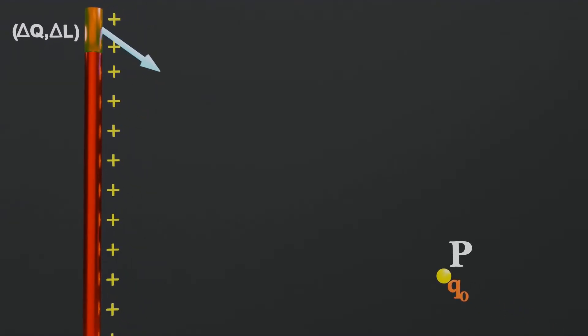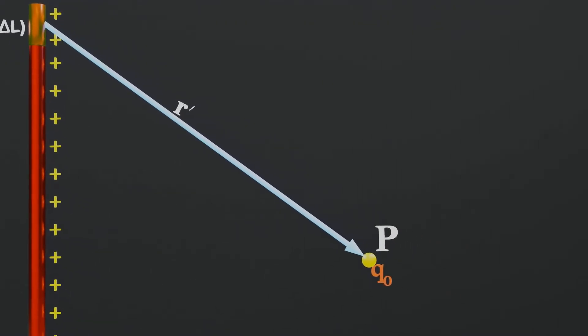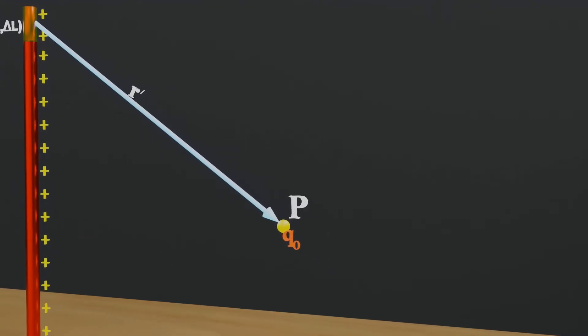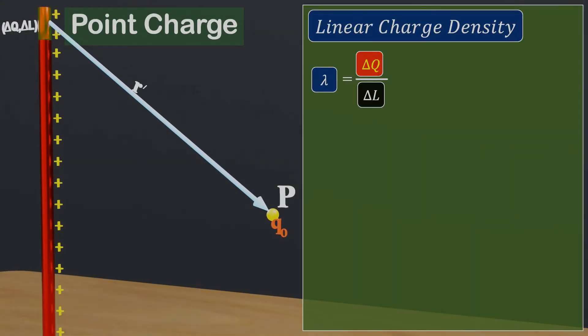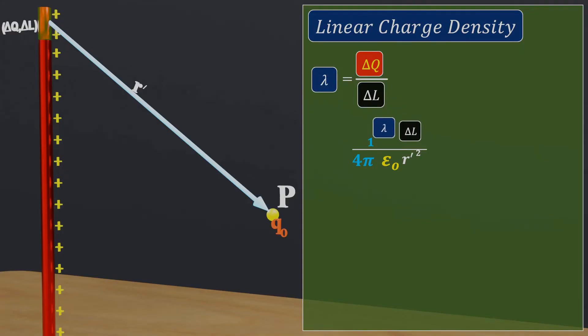Now, let's place a test charge q0 at point P, separated by distance r prime from the element del L to measure the electric field intensity at point P. Since the size of the del L element is much smaller than the distance r prime, we can consider the charge del Q as a point charge, and Coulomb's law can be applied now. Therefore, the small electric field del E at point P will be equal to 1 upon 4 pi epsilon 0 times del Q divided by r prime square. Using the formula of linear charge density, we can write the charge del Q as lambda into del L.